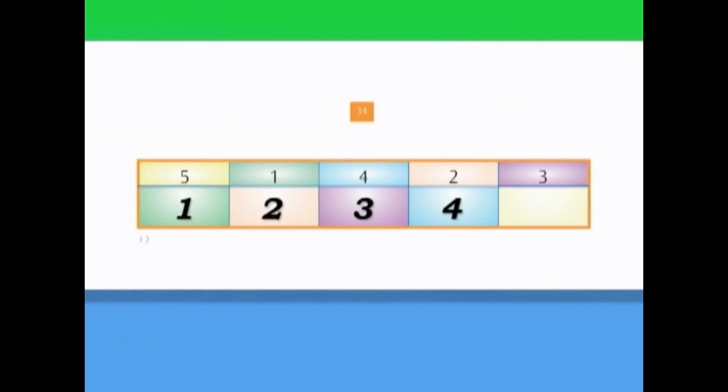So now we have one, two, three, four. And the last number must be five. So let's write five in the last box. On the top row we have five, one, four, two, three. And on the bottom row, we have one, two, three, four, five.